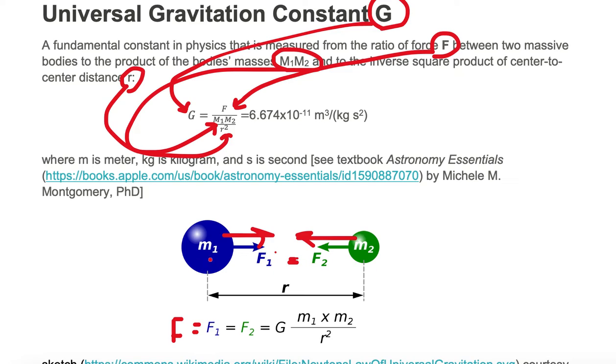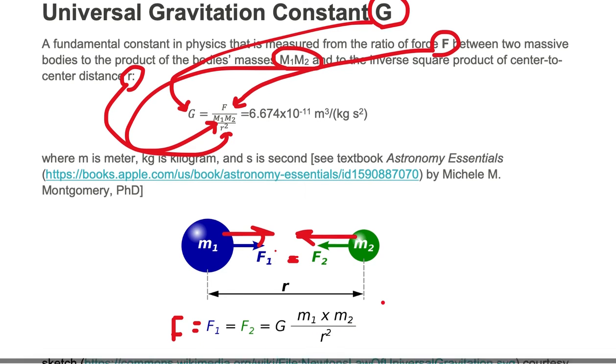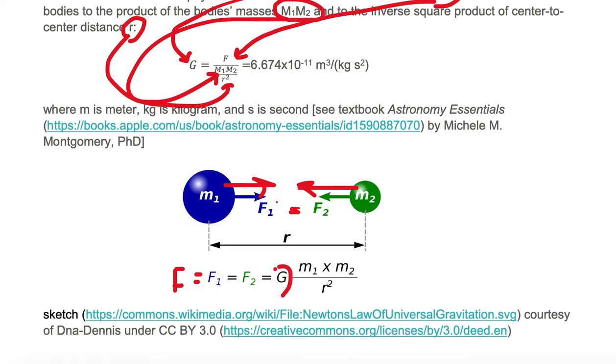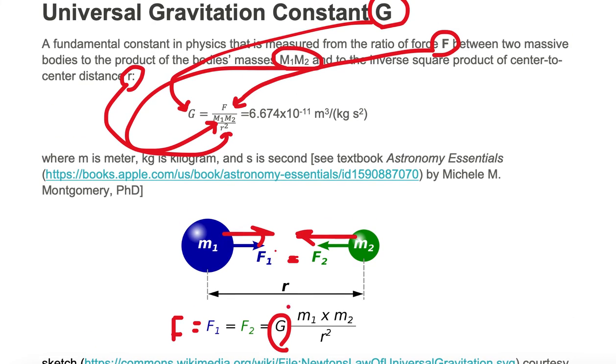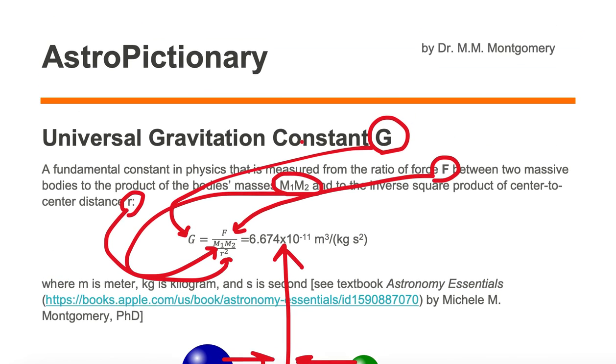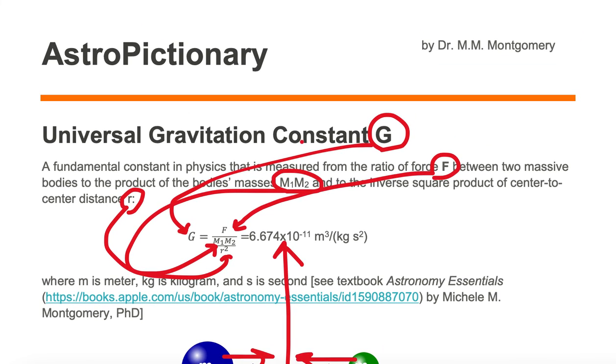This gravitational force F is equal to the product of the masses m1 and m2 divided by r squared, but it's not exactly equal to it. There is a small proportionality constant G, and that small proportionality constant is equal to 6.674 times 10 to the minus 11 meter cubed divided by kilogram second squared.